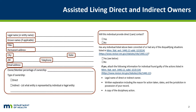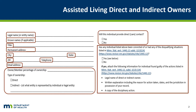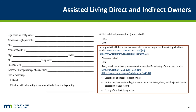It is critical for each contact listed to indicate whether they have been convicted of or had any of the disqualifying situations listed in Minnesota Statute Section 144G.12. If the answer is yes to any of the disqualifying situations, the applicant must provide the legal name of the owner, a written explanation of the reason for the action taken, dates, the jurisdiction in possession of the record, and a copy of the disciplinary action.